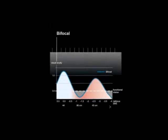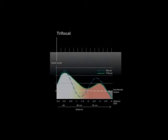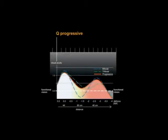Bifocal optics provide good near and intermediate visual acuity, but there is a weakness in intermediate distances. Trifocal optics try to compensate the intermediate weakness, but any additional diffractive structure causes additional light scatter. Consequently, an optimized depth of focus optic — an innovative progressive diffractive array — can be the best solution for presbyopia as realized with the add-on progressive.